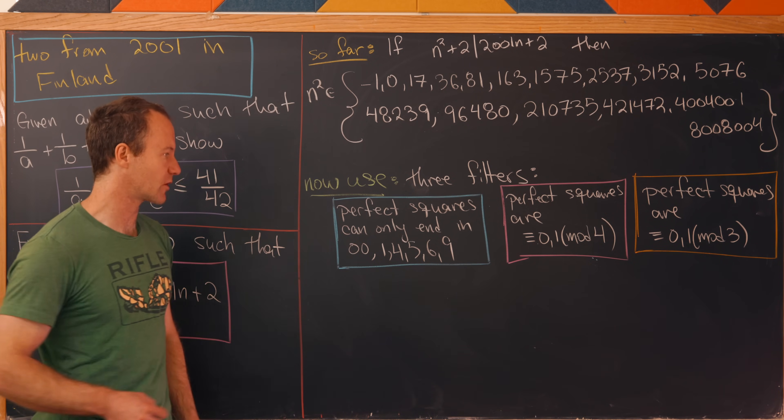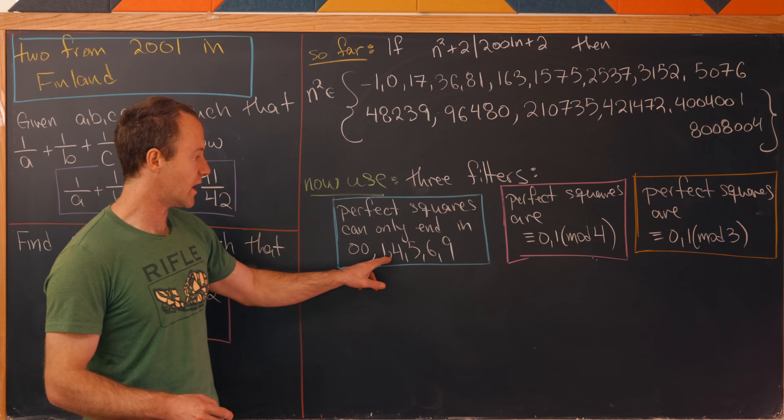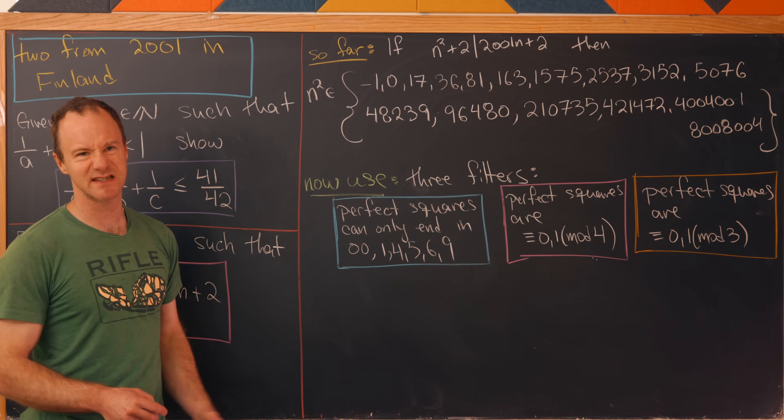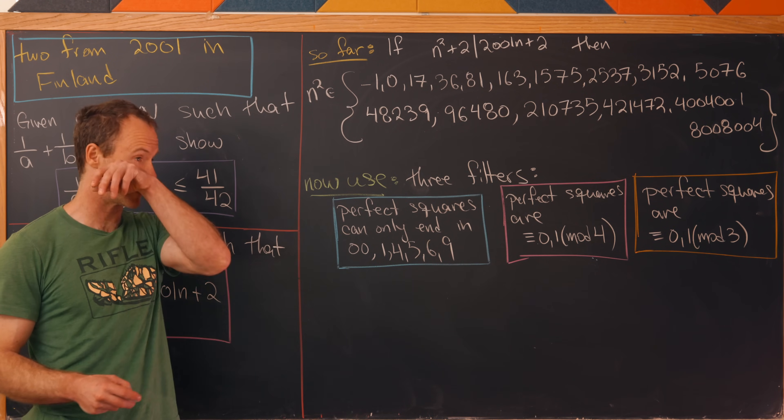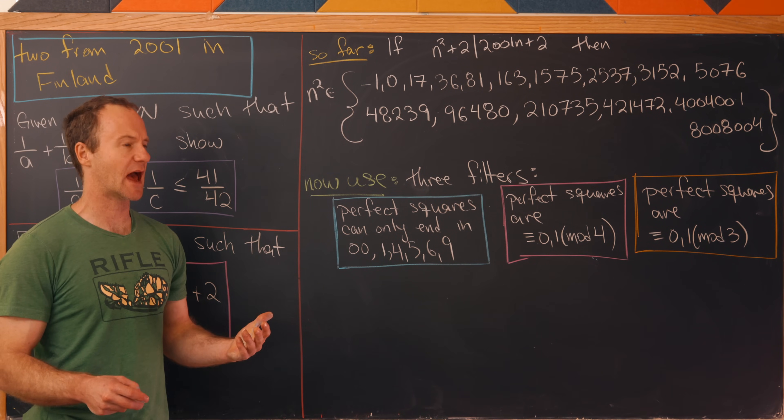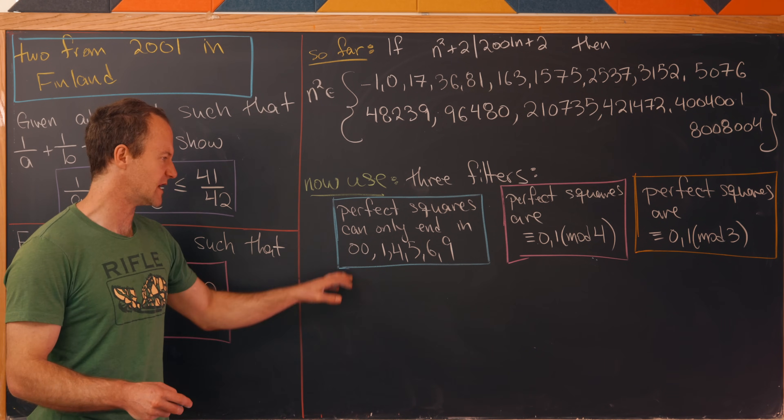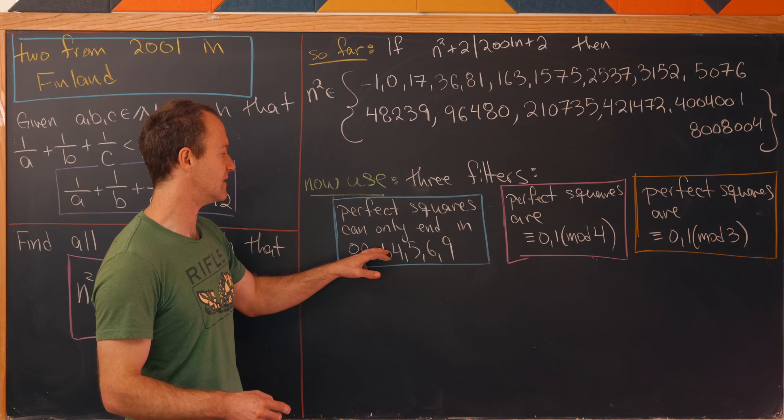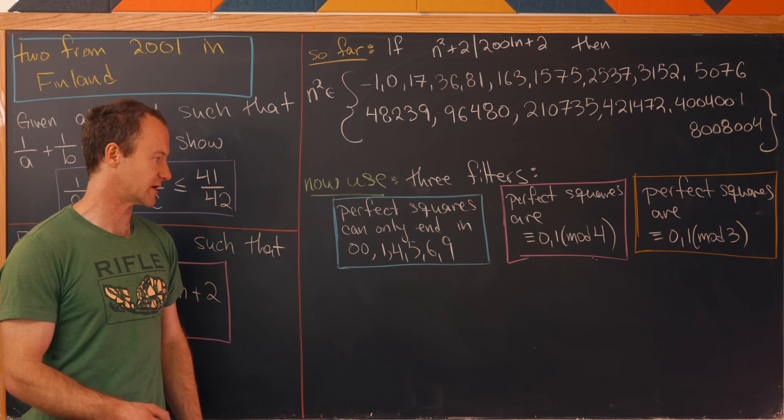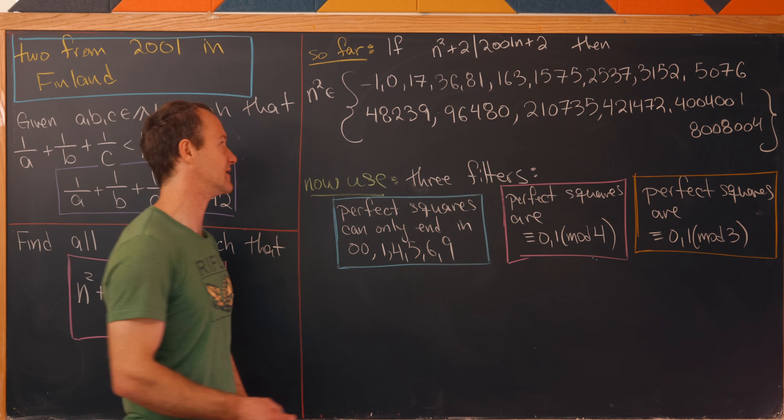So the first is that perfect squares can only end in double zeros, 1, 4, 5, 6, 9. So this is discussing the last digit of perfect squares. And you can get this by looking at perfect squares mod 10. And I included the double zero in here. That's kind of a little bit different than these because that's the last two digits. But that's applicable here.